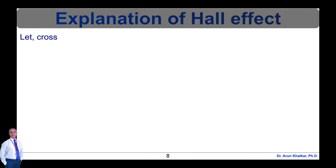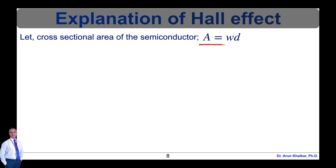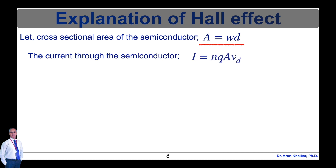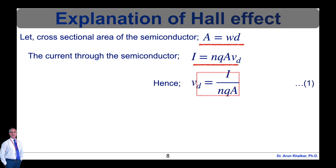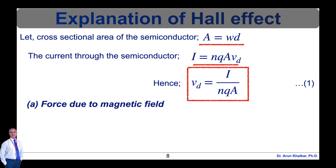Now let's consider the cross-sectional area of the semiconductor: A = w × d. The current through the semiconductor is I = n·q·A·v_d, hence the drift velocity v_d = I / (n·q·A). Let's call this equation number 1. Now let's look at the force due to the magnetic field.